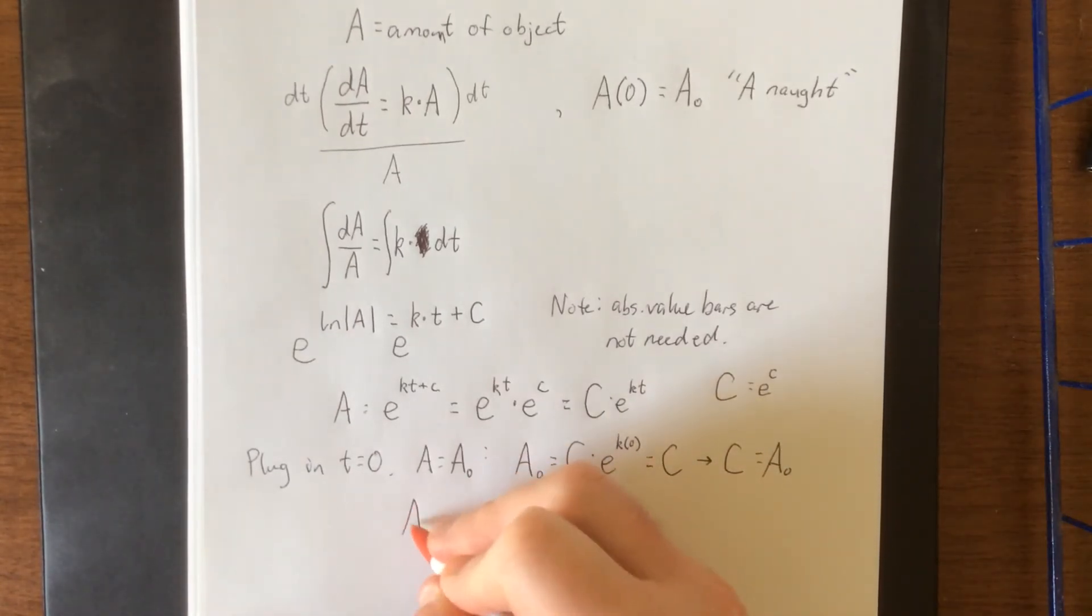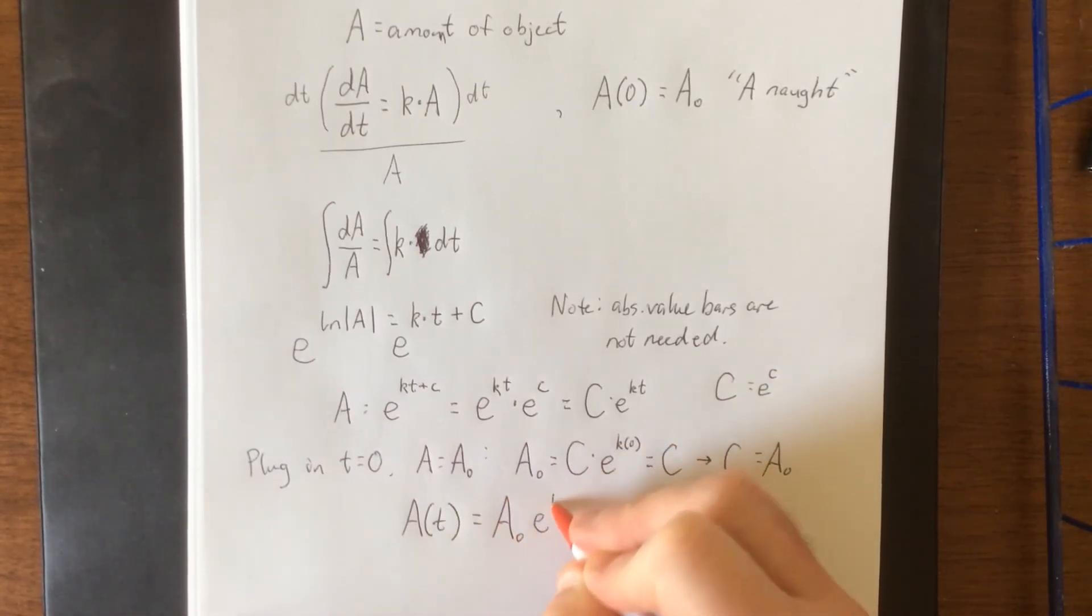As such, we have the following. In function notation, A of t is equal to A naught e to the kt.